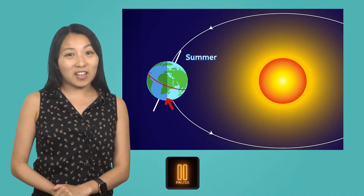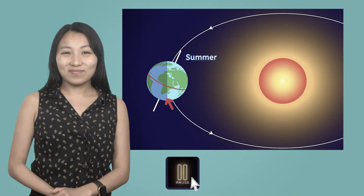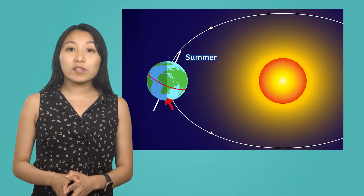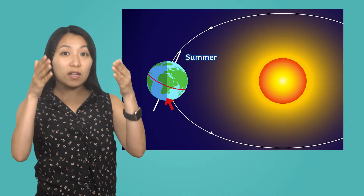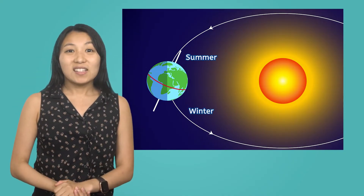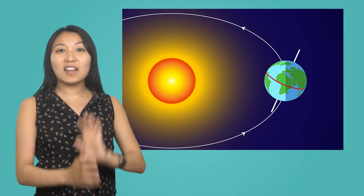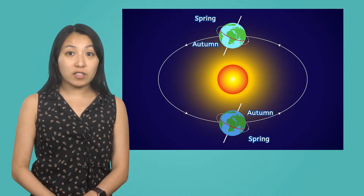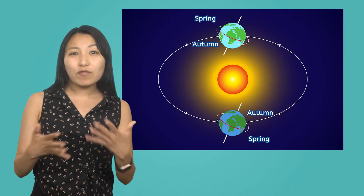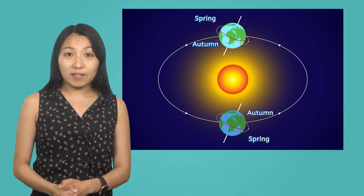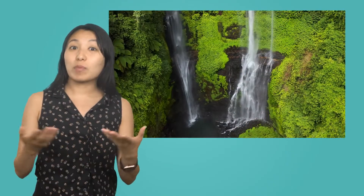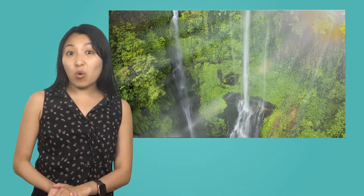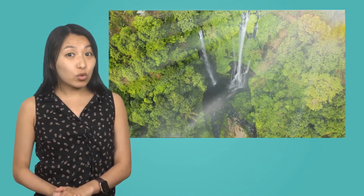Pause the video and record your thoughts in your guided notes. The hemisphere tilted away receives less direct sunlight, making it colder with fewer hours of sunlight. That means when it's summer in one hemisphere, it's winter in the opposite. Six months later, the southern hemisphere is tilted toward the Sun and has summer, and the northern hemisphere is tilted away and has winter. Spring and autumn occur when both hemispheres are tilted toward the Sun more evenly, so they both have mild weather and days and nights of a similar length. Places near the equator, like where tropical rainforests are located, stay warm and sunny all year because they are always tilted toward the Sun and don't get much change in temperature or daylight throughout the year.